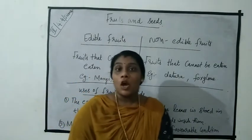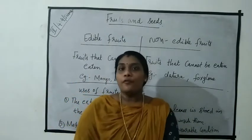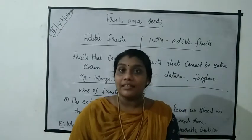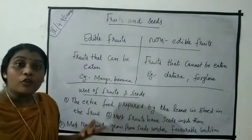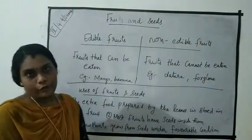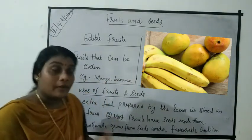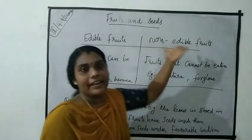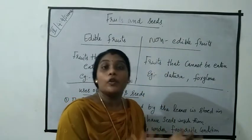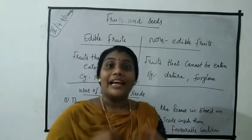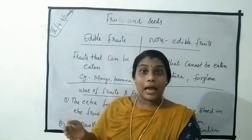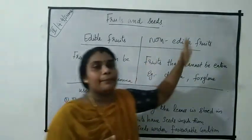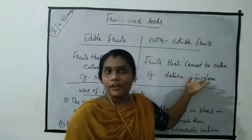The next topic is fruits and seeds. We already know most fruits have seeds inside them, and fruits have different shapes, colors, and sizes. Fruits that can be eaten are called edible fruits — for example, mango and banana. Fruits that cannot be eaten, such as datura and foxglove, are called non-edible fruits.